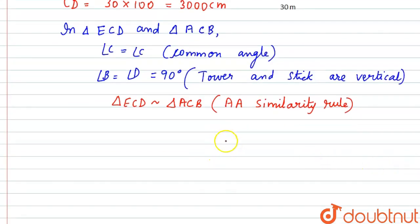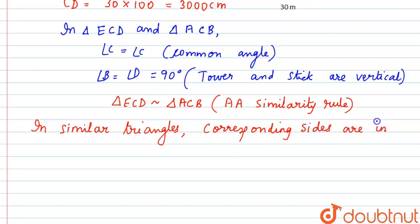When two triangles are similar, their corresponding sides will be in the same ratio. So we can write in similar triangles corresponding sides are in same ratio.